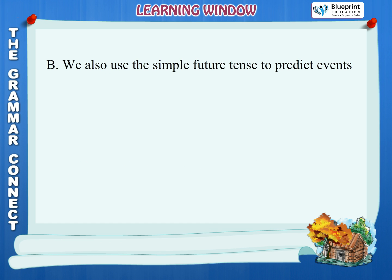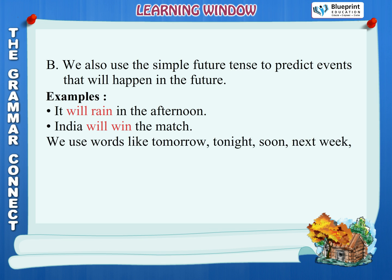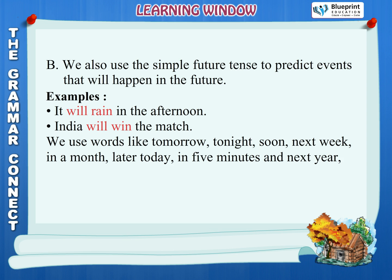B. We also use the Simple Future Tense to predict events that will happen in the future. Examples: It will rain in the afternoon. India will win the match. We use words like tomorrow, tonight, soon, next week, in a month, later today, in five minutes, and next year when we want to express something in the Simple Future Tense.